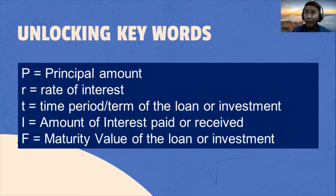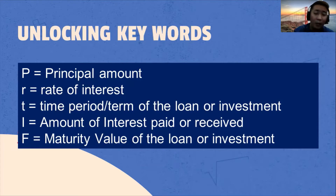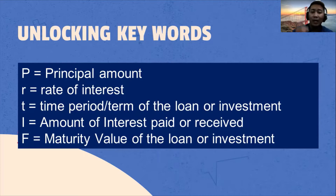Before we proceed on solving the problem, let's unlock the keywords. We will be using P for the principal amount, which is the money borrowed. Rate of interest is the amount a lender charges a borrower, and it is a percentage of the principal amount loaned. T is the time period, meaning the term of the loan or investment. I is the amount of interest paid or received. F is the maturity value of the loan or investment, that means principal amount plus interest equals maturity value.